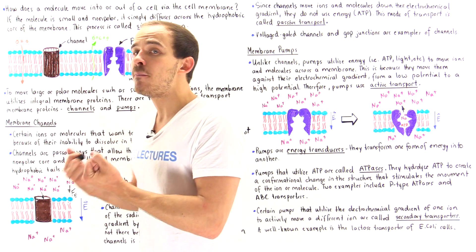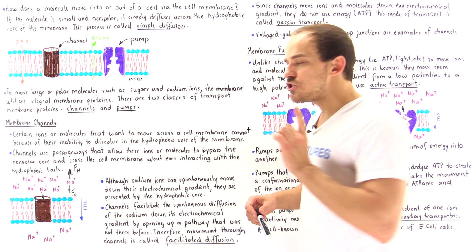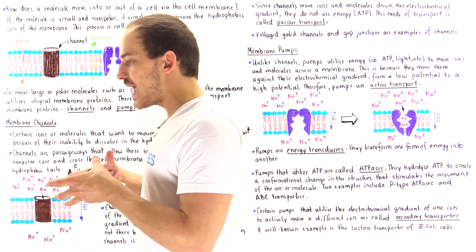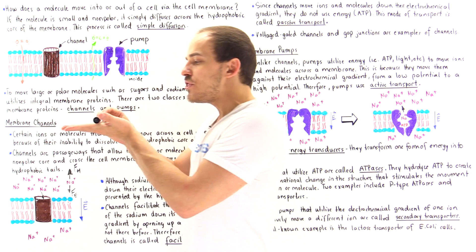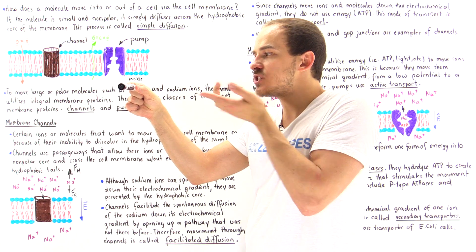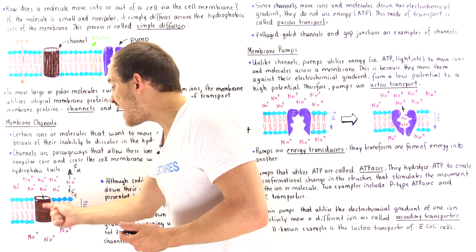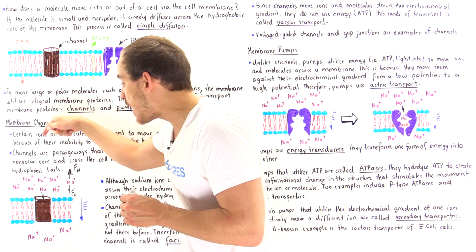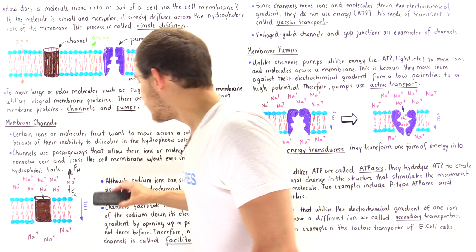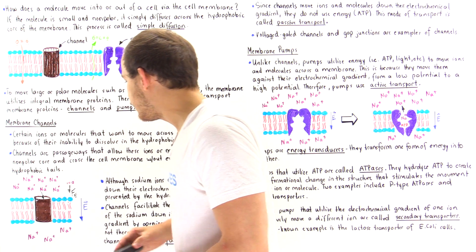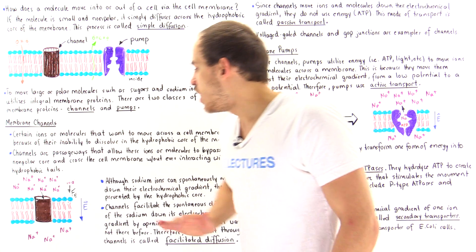Because the sodium ion carries a full positive charge, it cannot dissolve in the non-polar hydrophobic core. What membrane channels do is create a passageway in the membrane that does not contain that hydrophobic core. This removes the blocking force, so now — just like the marker can move down its gravitational potential once the barrier is removed — the sodium ions can move down their electrochemical gradient from a high electric potential to a low electric potential through that channel passageway.